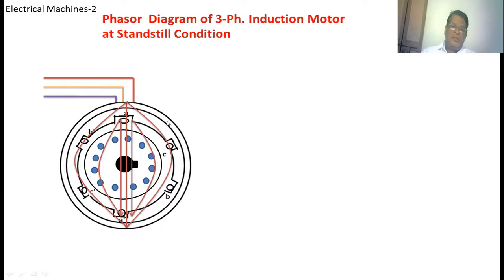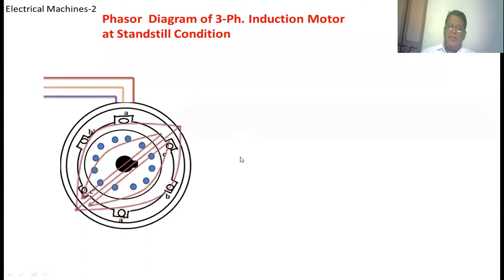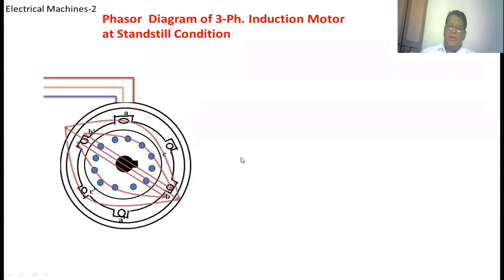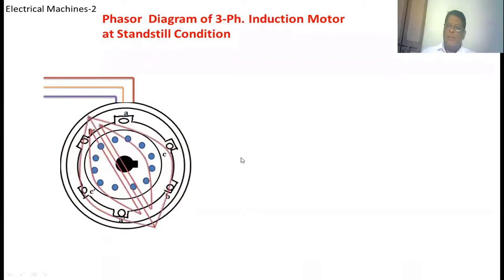This is the induction motor and this is the stator winding. In the stator winding, a 3-phase winding is placed, which is displaced by 120 degrees. When you apply a 3-phase voltage to the stator winding, 3-phase currents pass through it and a rotating field is created from the stator winding. It runs with synchronous speed whose magnitude is equal to 1.5 times phi m.